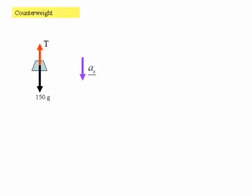There are two objects in this system which are accelerating: first of all the counterweight A, and secondly the lift L. We start by drawing a free body diagram for the counterweight. What forces are acting on that weight? There's gravity acting downwards, which is 150 times G, because the mass of the counterweight is 150 kg, and then in the upwards direction there is the tension in the cable, which we'll call T.